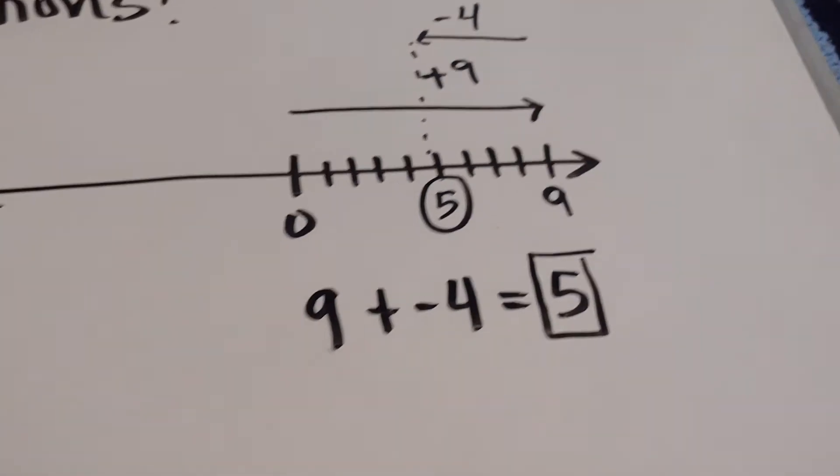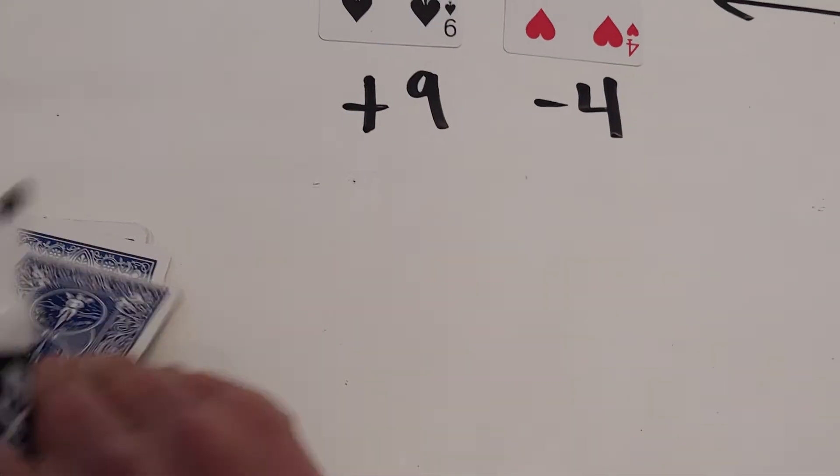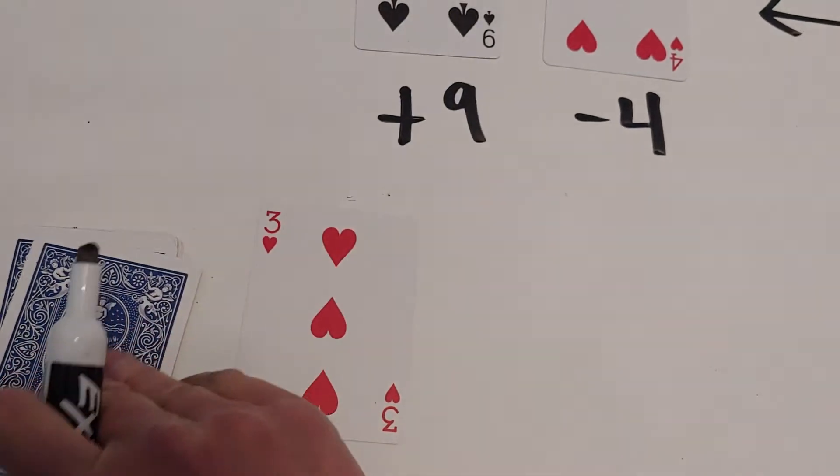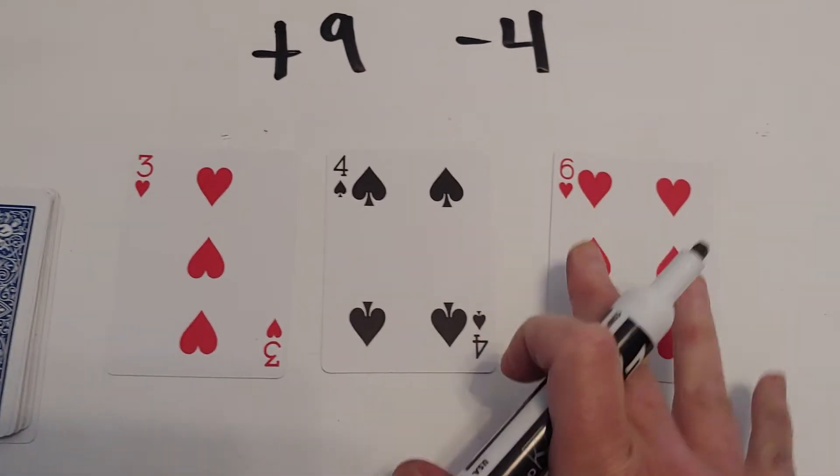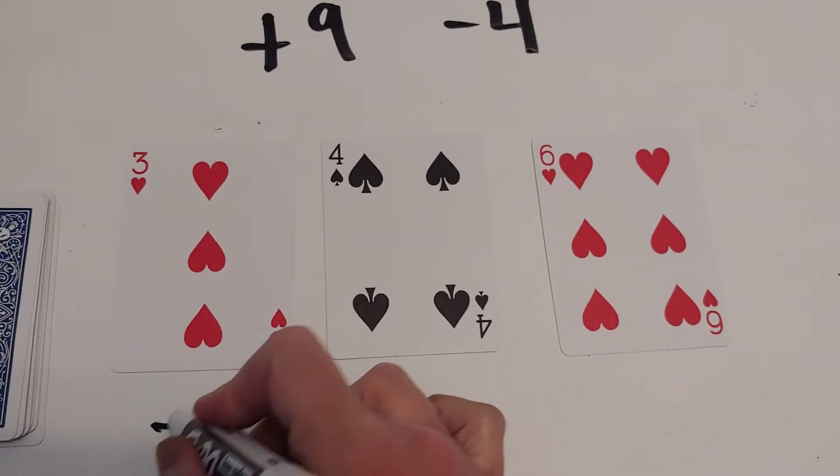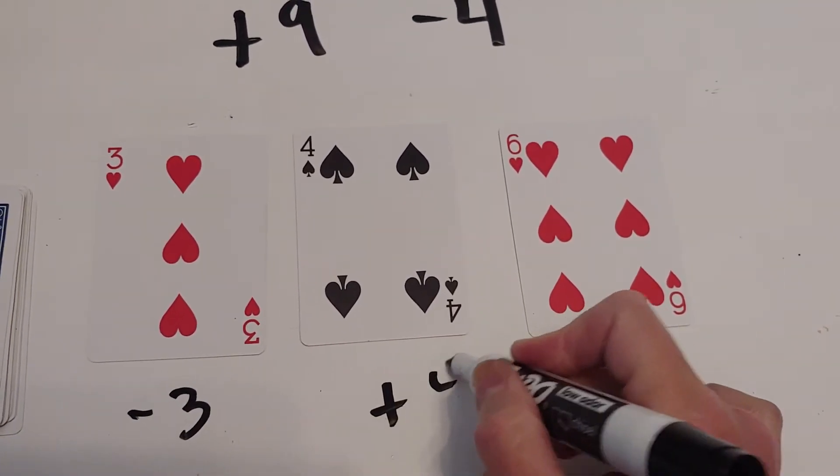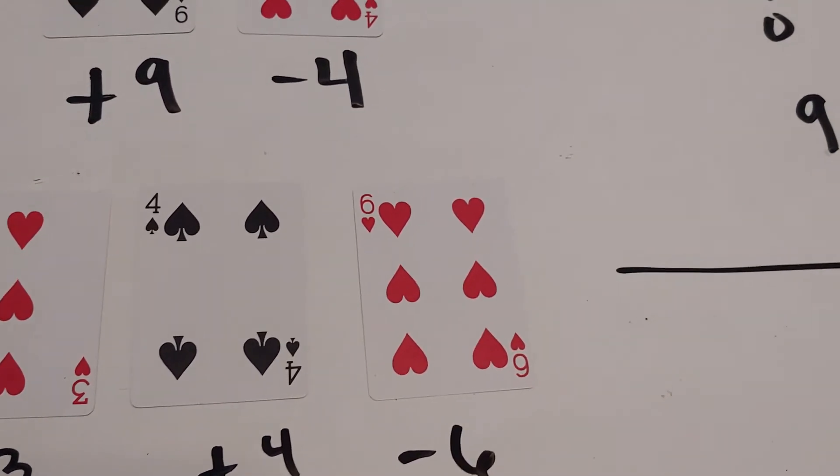Let's try one more example. My next cards are negative three, positive four, and negative six. So we're doing three cards: negative three, positive four, and negative six.